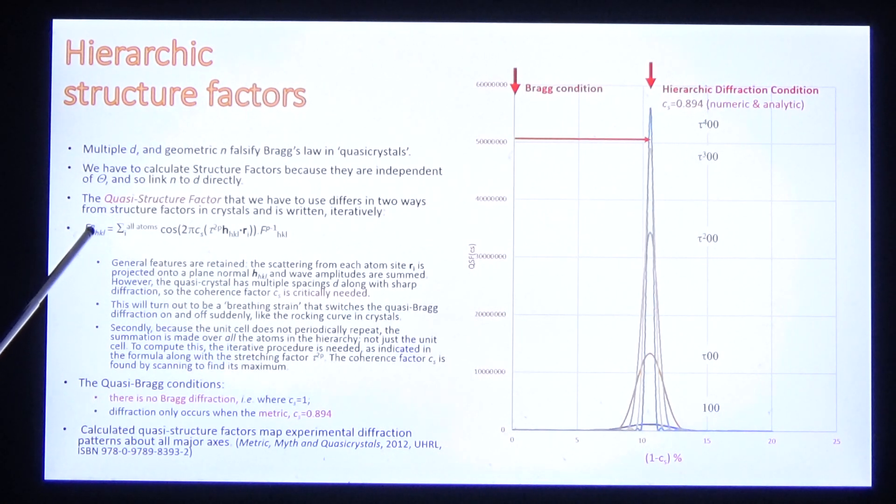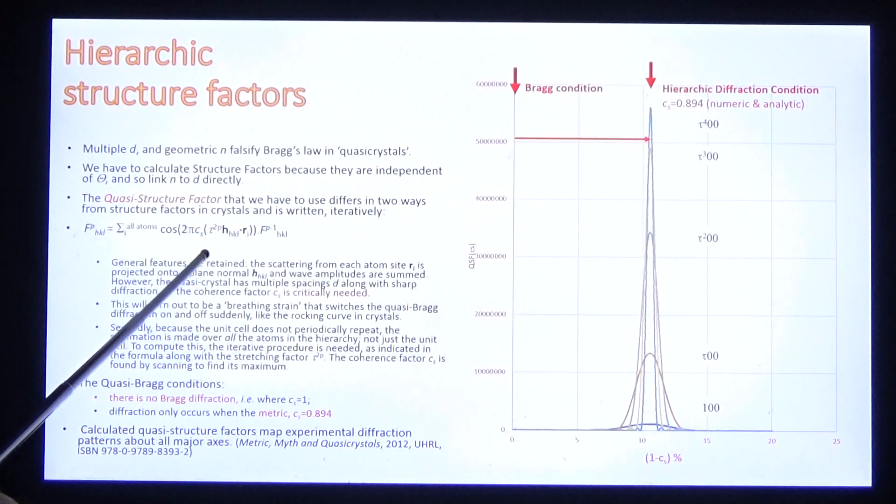In quasicrystals, we make two adjustments. Firstly, because we have multiple d-spacings, we include a coherence factor. We will derive this precisely as we go along.